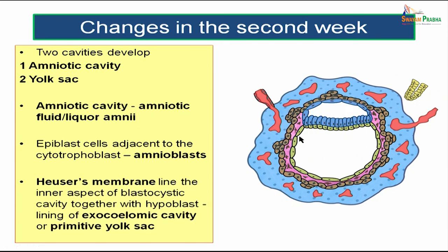The epiblast adjacent to the cytotrophoblast, along with cells derived from the cytotrophoblast, forms the amnioblast, which covers the amniotic cavity. There is another term — Heuser's membrane — which lines the inner aspect of the blastocystic cavity together with the hypoblastic lining of the exocelomic cavity. The amnioblast covers the amniotic cavity; Heuser's membrane covers the yolk sac, both derived from the cytotrophoblast. The yolk sac formed now is called the primitive yolk sac, meaning another yolk sac will form as development proceeds.